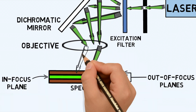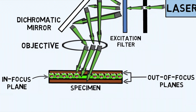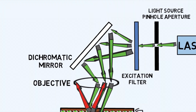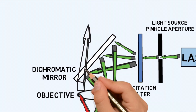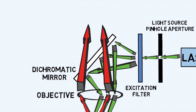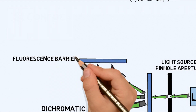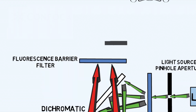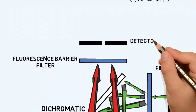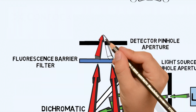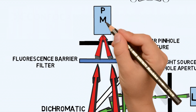Fluorophores in the specimen get excited by the light, causing them to emit detectable fluorescence. The fluorescence emitted from the specimen has a long wavelength that then passes through the dichromatic mirror fluorescence barrier filter and is focused into a second pinhole aperture into the photomultiplier tube.